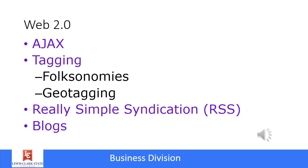Then there's tagging. You're probably familiar with the concept of hashtagging, which allows people to categorize blogs and pictures and videos by what we might call folksonomies. Folksonomies include places where users categorize their own web pages and photos and videos, and probably the best example of this would be Pinterest.